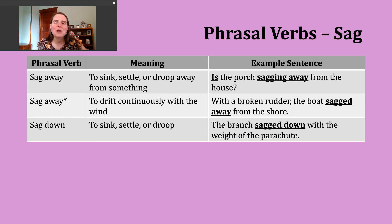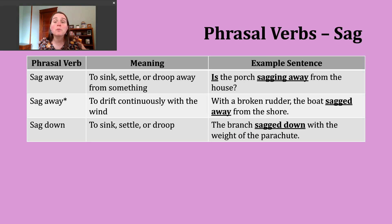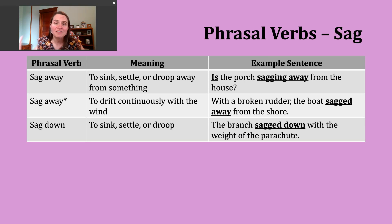The last phrasal verb we'll discuss today is to sag down. This can also mean to sink, settle, or droop. This phrasal verb — particularly the particle 'down' — is just another way to stress how something is being pulled downward. It's a little redundant because it really goes back to our first definition. An example sentence might be: 'The branch sagged down with the weight of the parachute.' It sounds like a parachute has been caught — those can be quite large and heavy, and if it's a light branch, it's being pulled down.